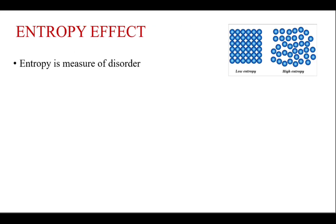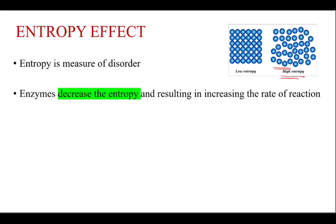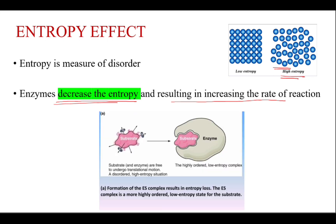Next is the entropy effect. Entropy is a measure of disorder — the more the disorder, the higher the entropy. Enzymes decrease entropy, resulting in an increase in the rate of reaction. Formation of the enzyme-substrate complex results in entropy loss, and the enzyme-substrate complex is a highly ordered, low-entropy state for the substrate.